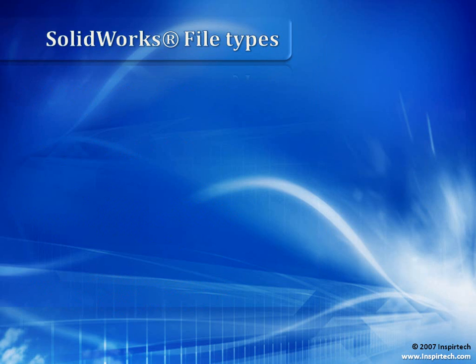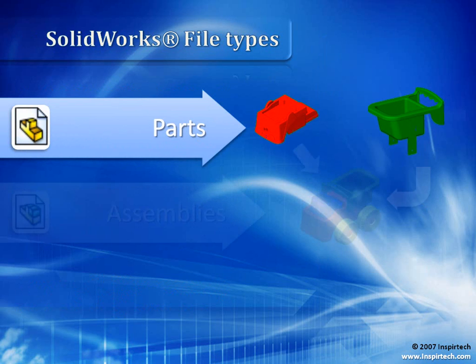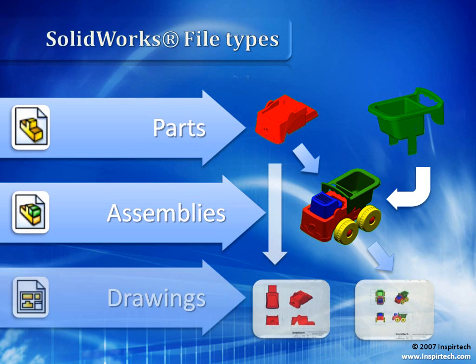Let's look at the various SOLIDWORKS file types. The first SOLIDWORKS file type is a part file, and parts come together to form assembly files. Then, both parts and assemblies are brought into drawing files, which are two-dimensional views of our three-dimensional parts and assemblies.